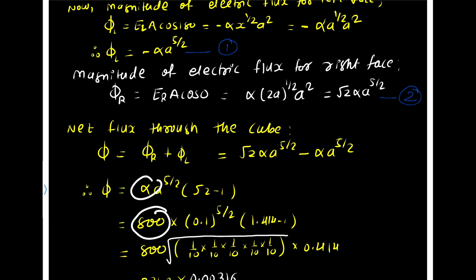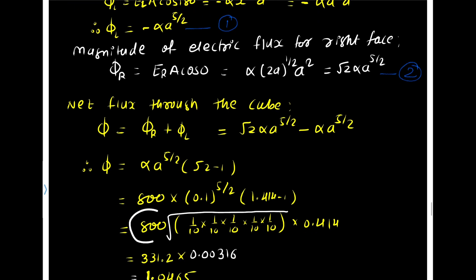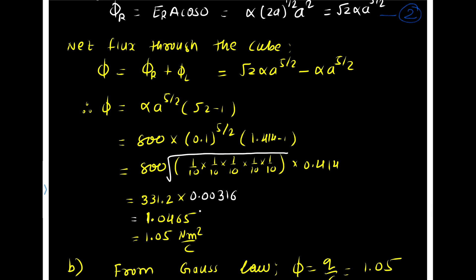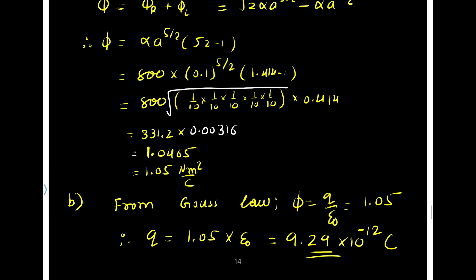The value of α is 800 and a is 0.1 meter. So 800 times 0.1^(5/2) times (√2 - 1). √2 is 1.414, so 1.414 - 1 = 0.414, times 800 = 331.2. 0.1^(5/2) involves dividing by 10 five-halves times. On solving this, we get 1.0465, which rounds to 1.05 Newton meter squared per coulomb.